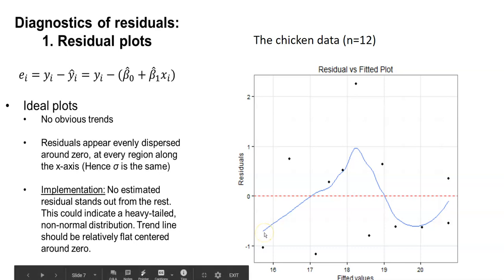What we can see here with the chicken data is that we have one data point that's kind of up here with a pretty high positive residual, but for the most part, the values are centered around zero.